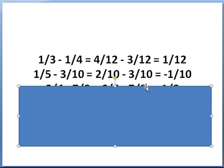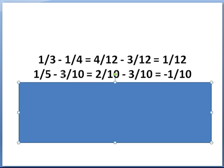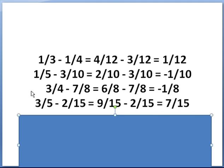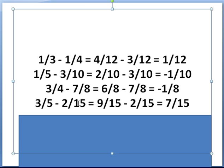One-fifth minus three-tenths: turn one-fifth into two-tenths, just like in the addition. Two minus three is negative one, so the answer is negative one-tenth. Three-quarters minus seven-eighths: change three-quarters to six-eighths. Six minus seven is negative one-eighth. Three-fifths minus two-fifteenths: three-fifths becomes nine-fifteenths. Nine minus two is seven-fifteenths.